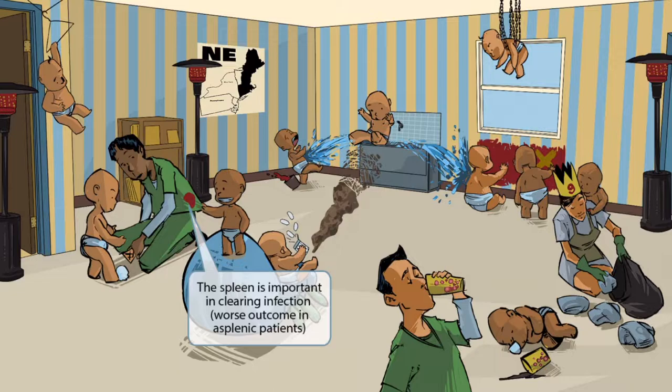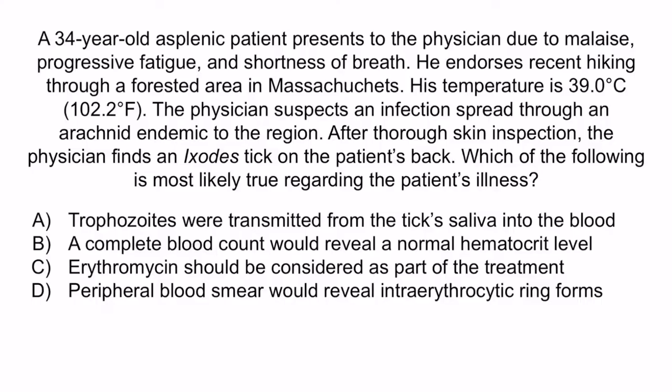Now let's do a review question. A 34-year-old asplenic patient presents with malaise, progressive fatigue, and shortness of breath. He endorses recent hiking through a forested area in Massachusetts. His temperature is 39.0°C (102.2°F). The physician suspects an infection spread through an arachnid endemic to the region, and finds an Ixodes tick on the patient's back. Which of the following is most likely true regarding the patient's illness? A) Trophozoites were transmitted from the tick saliva into the blood. B) A CBC would reveal a normal hematocrit level. C) Erythromycin should be administered as part of the treatment. D) Peripheral blood smear would reveal intra-erythrocytic ring forms.